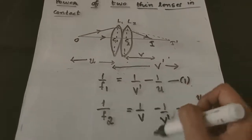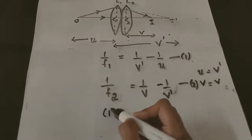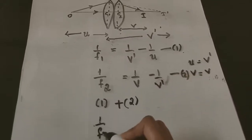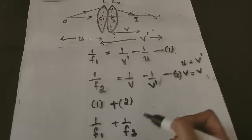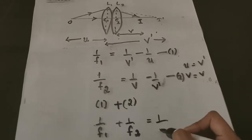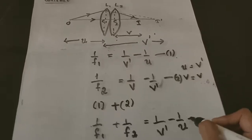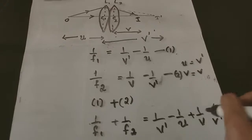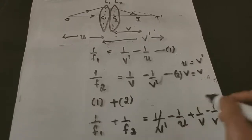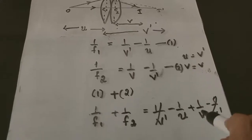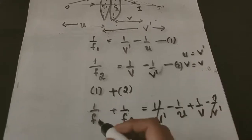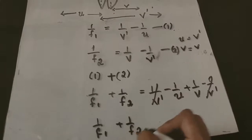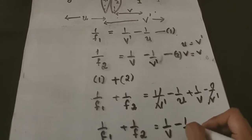Now let us add equation 1 and equation 2. The left-hand side becomes 1/F1 + 1/F2. On the right-hand side we get 1/V' − 1/U + 1/V − 1/V'. The 1/V' terms cancel, and we are left with 1/F1 + 1/F2 = 1/V − 1/U.